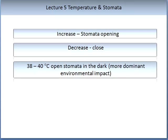Finally, we will look at temperature. Temperature is probably the most impacting environmental influence on stomata. As the temperature increases, stomata aperture tends to increase, resulting in stomata being more open. As temperature decreases, stomata will close. In experimentation, it has been observed that when plant temperatures reach 38 to 40 degrees Celsius, stomata will open even in the dark. This evidence indicates that some environmental factors are more dominant than others.